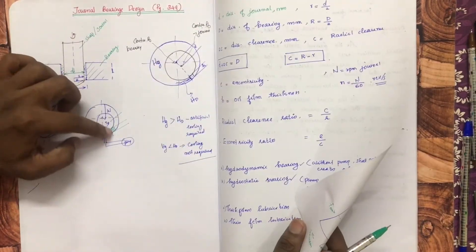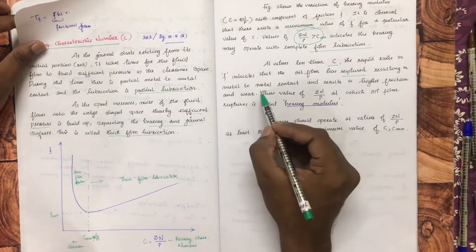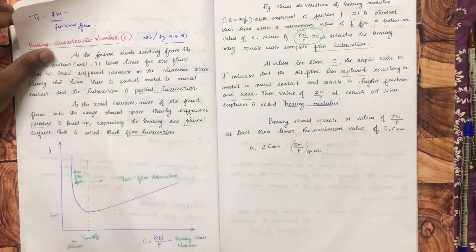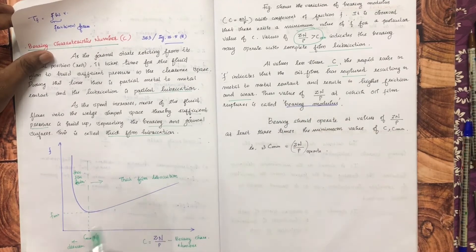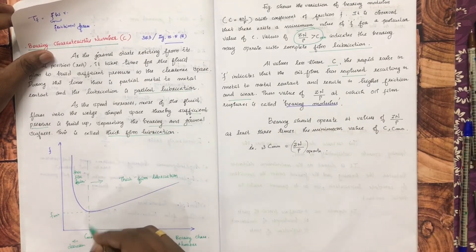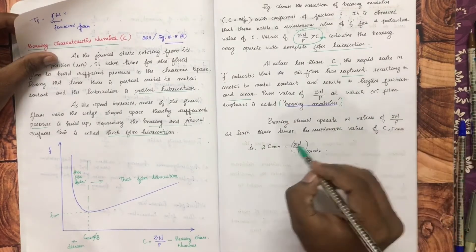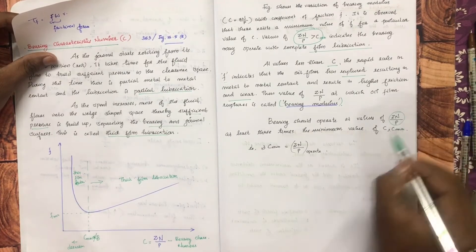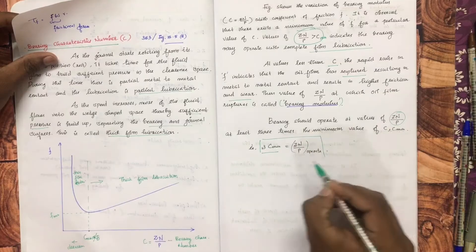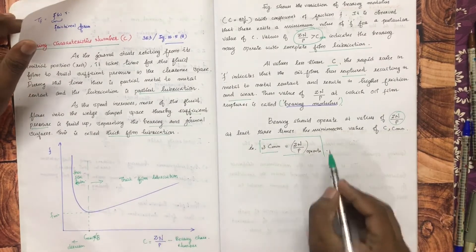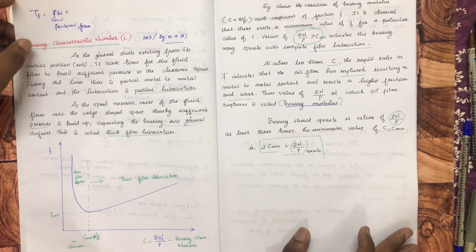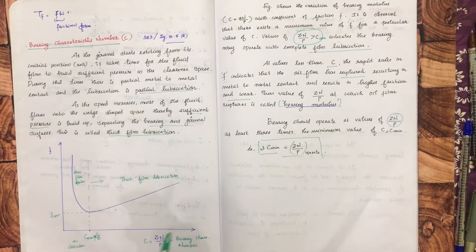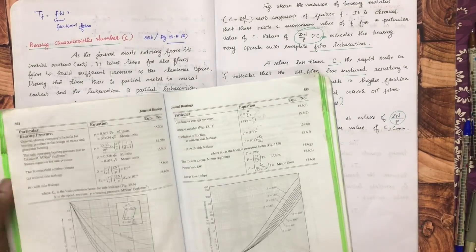Oil film rupture leads to metal-to-metal contact and the result is higher friction and wear. The value of Zn/P at which oil film rupture occurs is called the bearing modulus. For normal operation, Zn/P should be maintained at 3 times the value of C minimum. The operating condition is that Zn/P should be at least 3 times C minimum — this is the bearing characteristic number at C minimum.